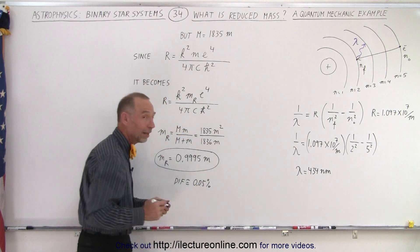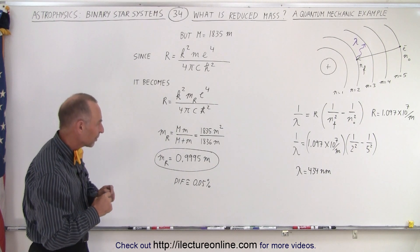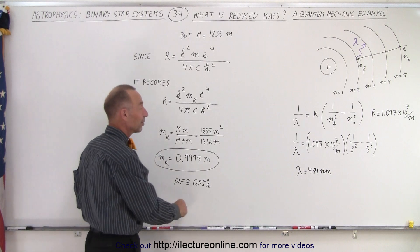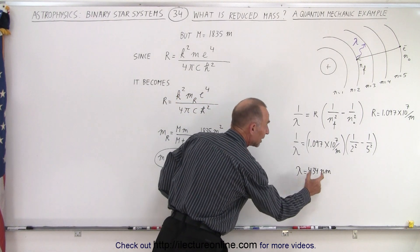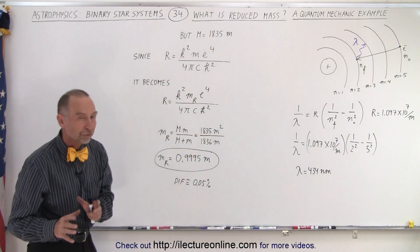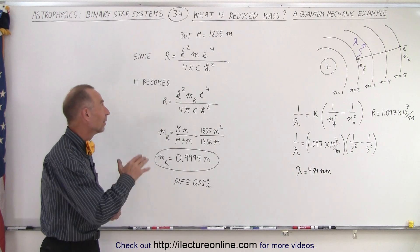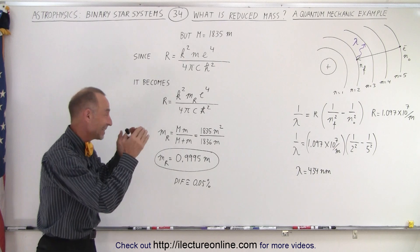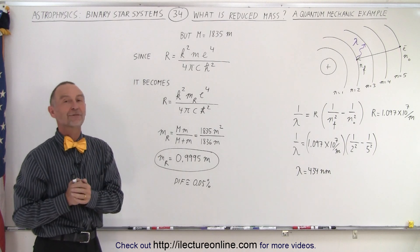That's not a lot, but it's 0.05 percent and it's enough for us to be able to measure the slight difference between the wavelength measured versus the wavelength calculated when we don't use the reduced mass. When we do use the reduced mass, we get the exact wavelength of the emitted photon.